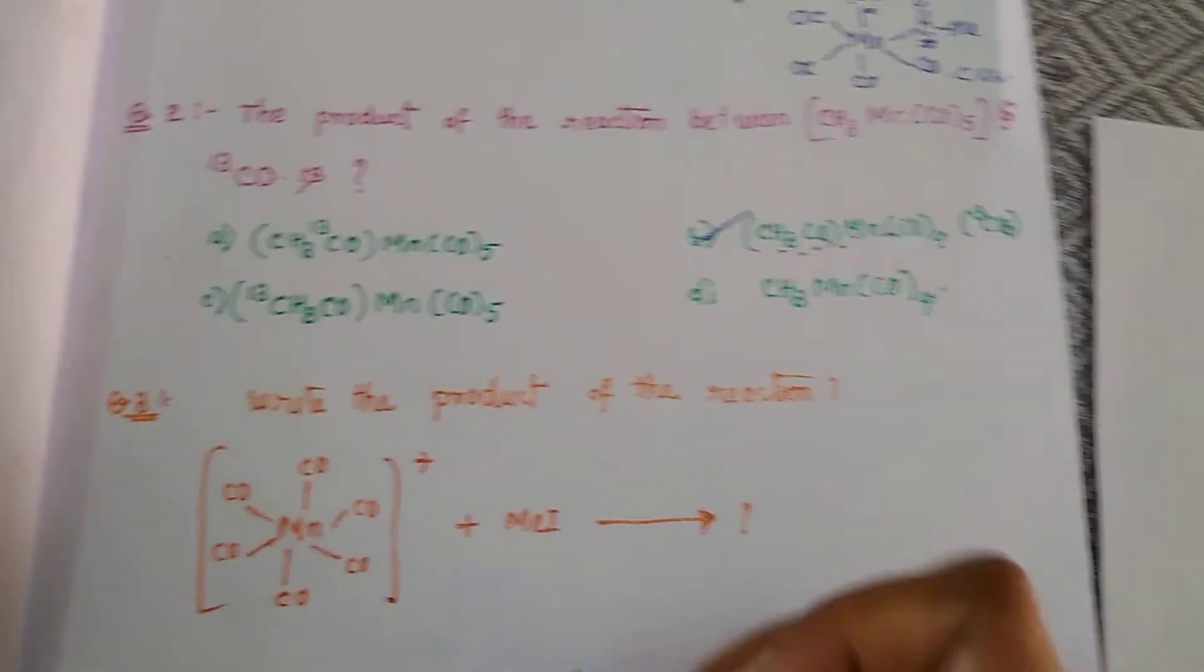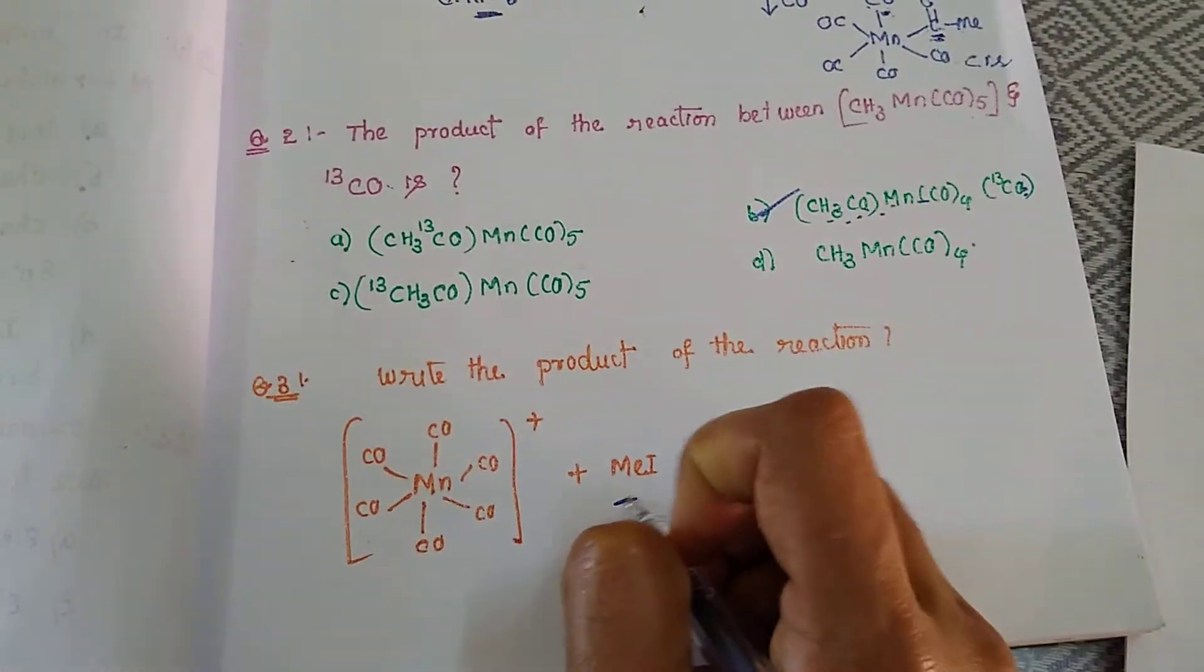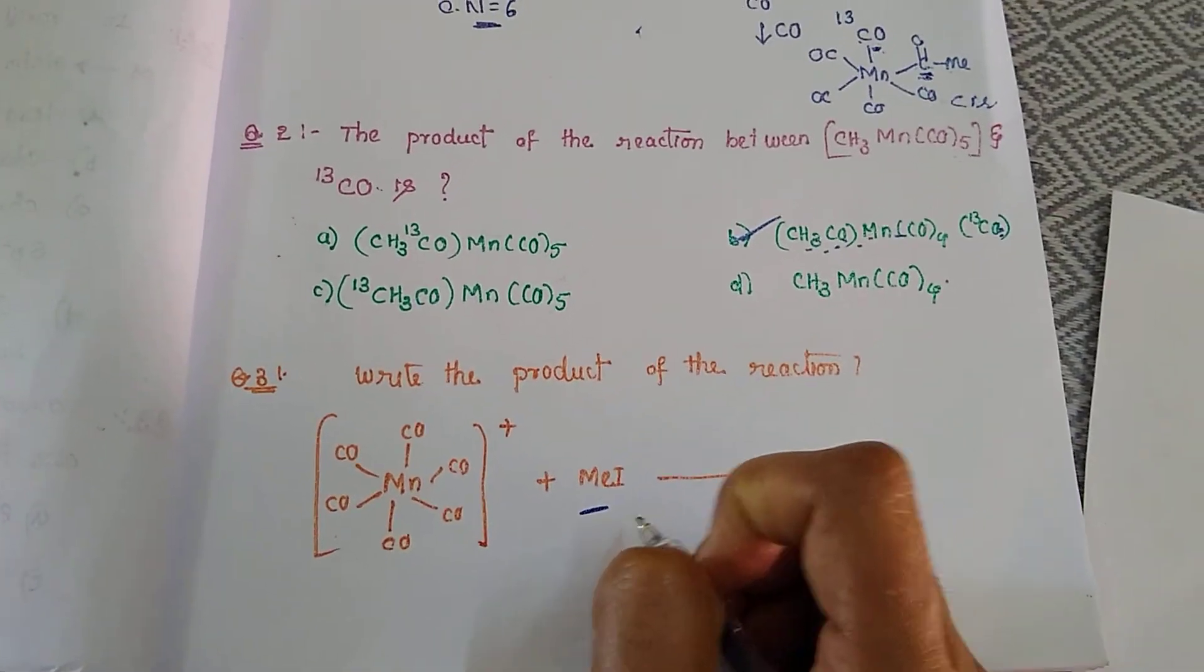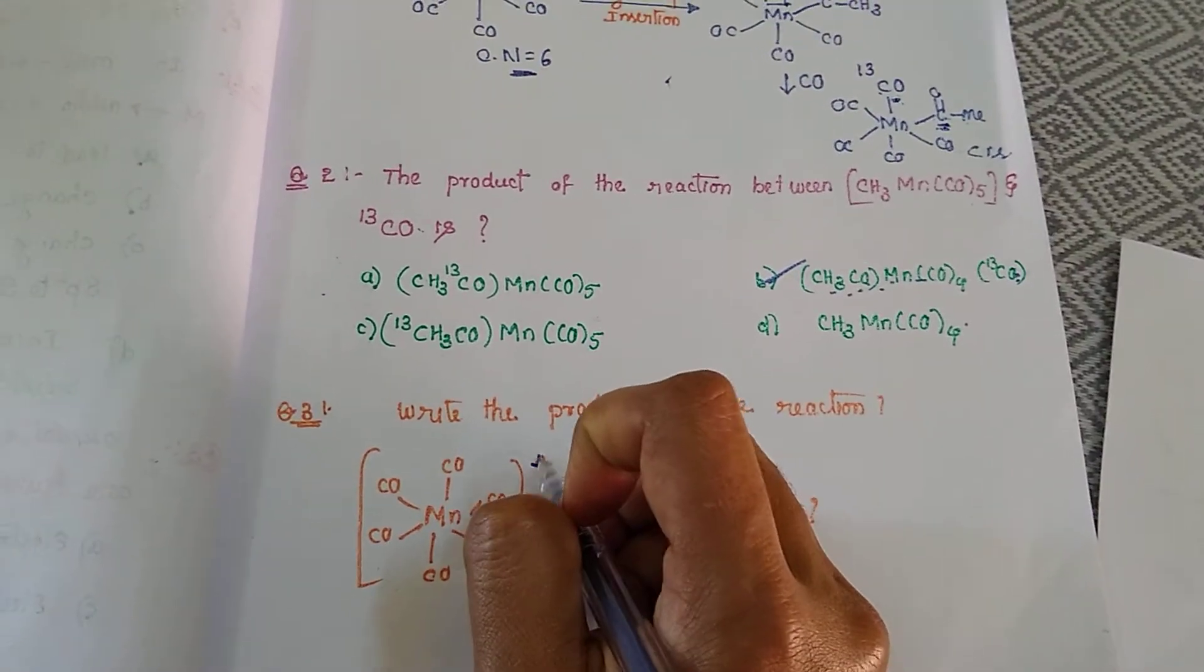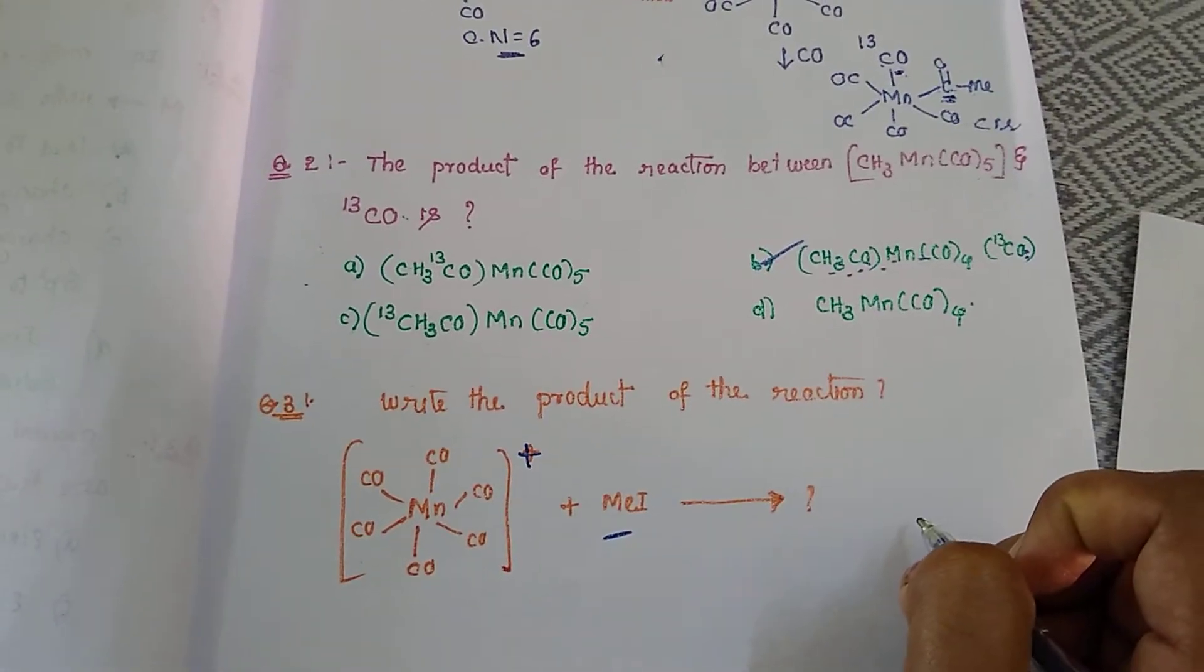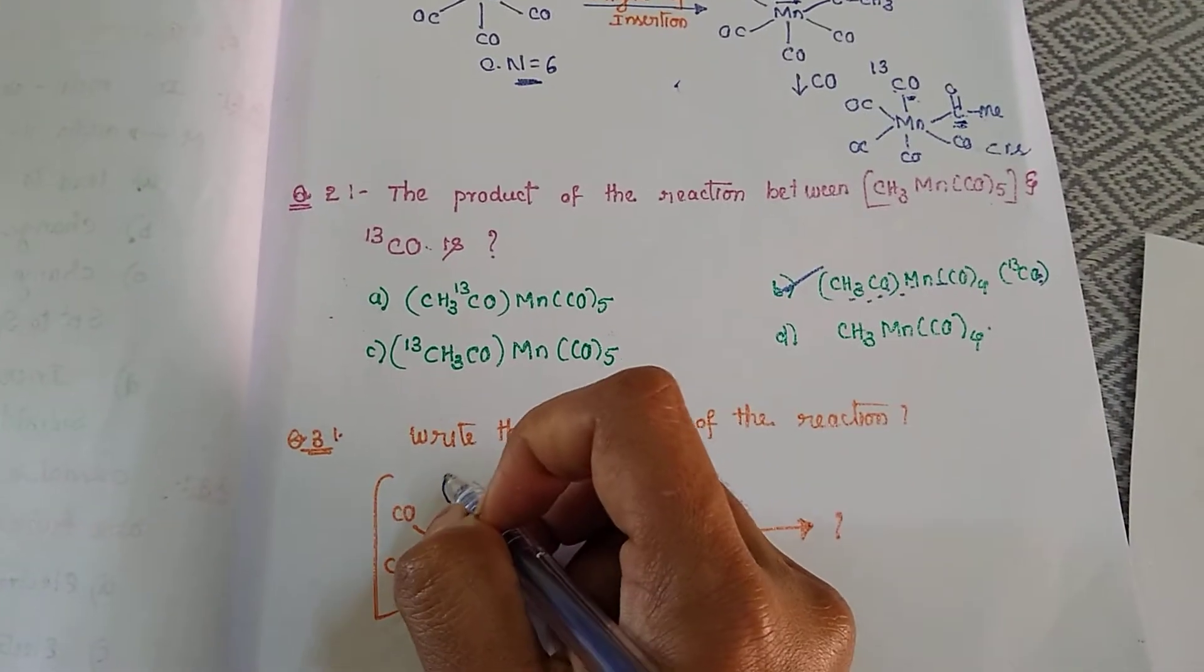Write the product of the reaction. Same concept but rather than CO they are going to add methyl iodide. Here you could notice this is electron deficient because it already has a plus, but here before undergoing addition it has to undergo insertion.